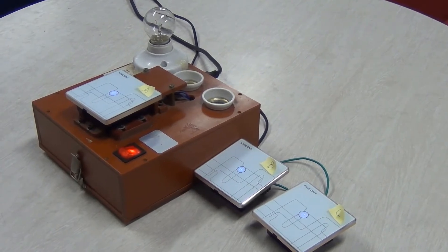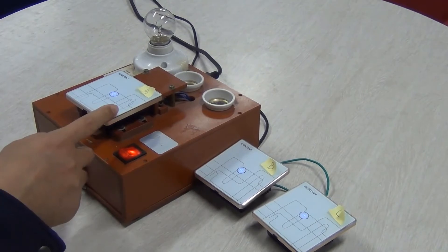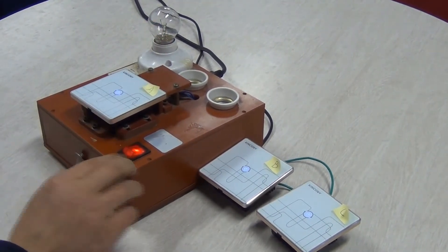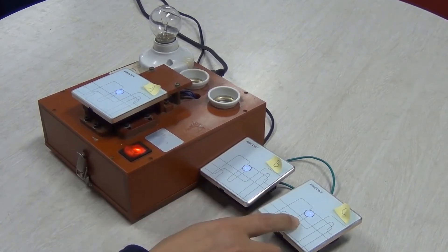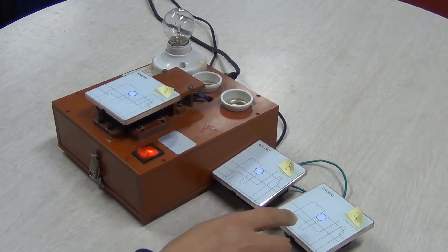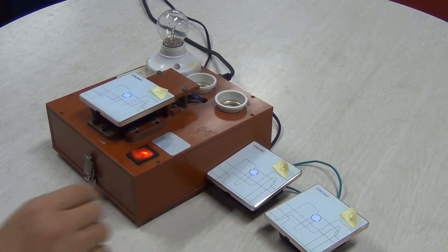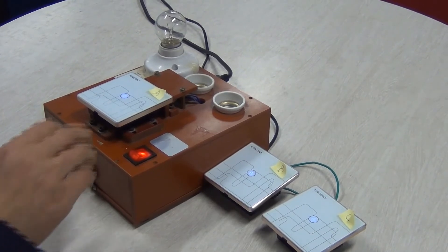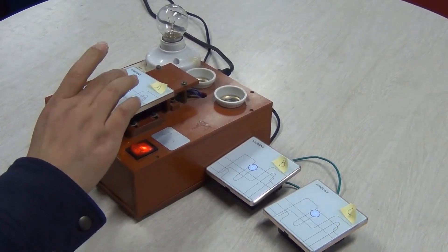First, you need to install the switches. Switch A connects to the lamp and the power, but switches B and C only need to be connected to the power. Then we start to match the function by holding and pressing.